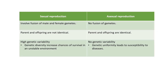In conclusion, sexual reproduction involves the fusion of male and female gametes, while asexual reproduction involves no fusion of gametes. In sexual reproduction, parent and offspring are not identical, but in asexual reproduction they are identical. Sexual reproduction produces high genetic variability, and this genetic diversity increases chances of survival in an unstable environment. Asexual reproduction produces no genetic variability, and genetic uniformity leads to susceptibility to disease.